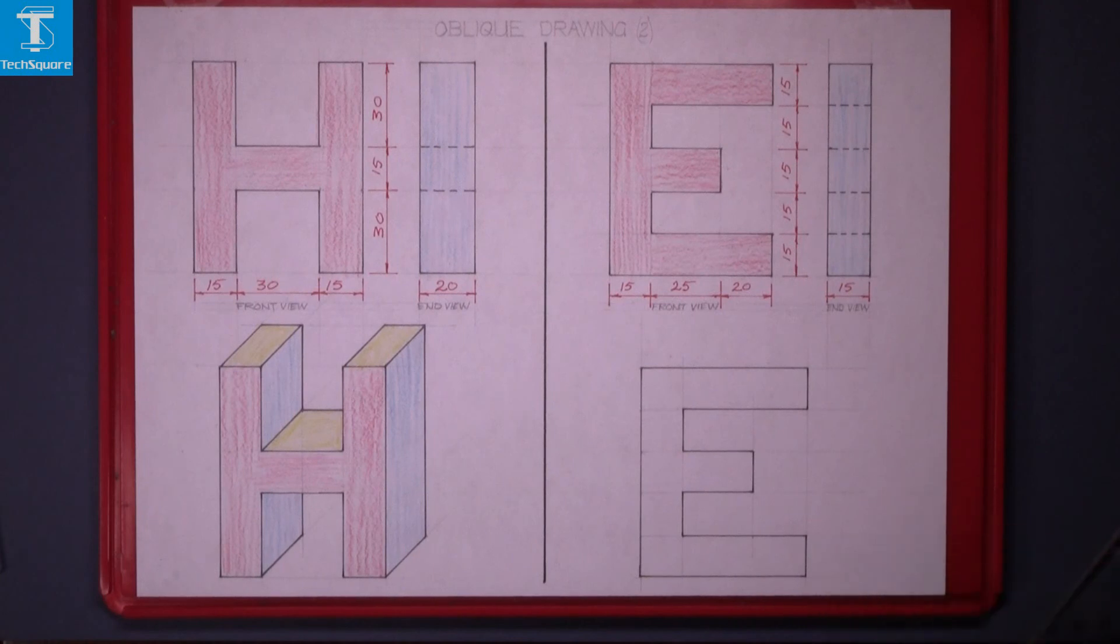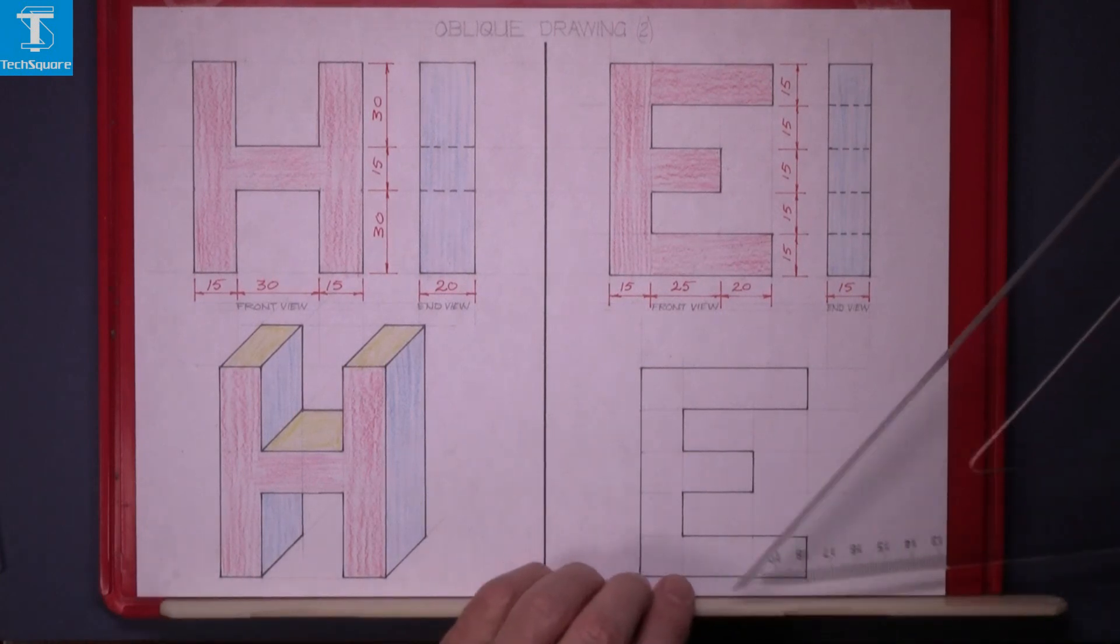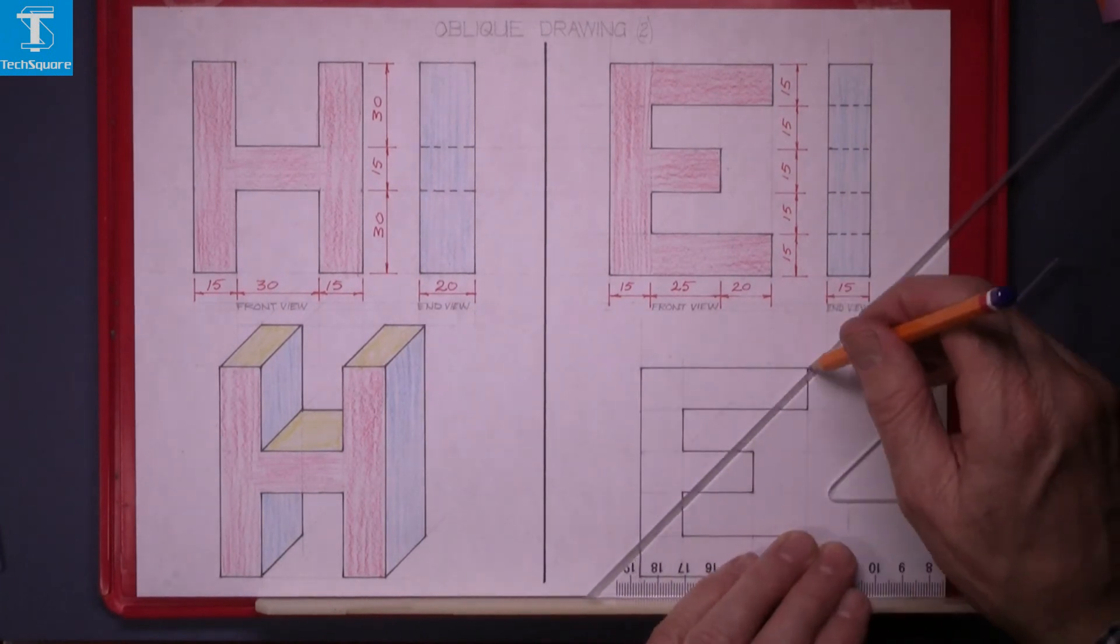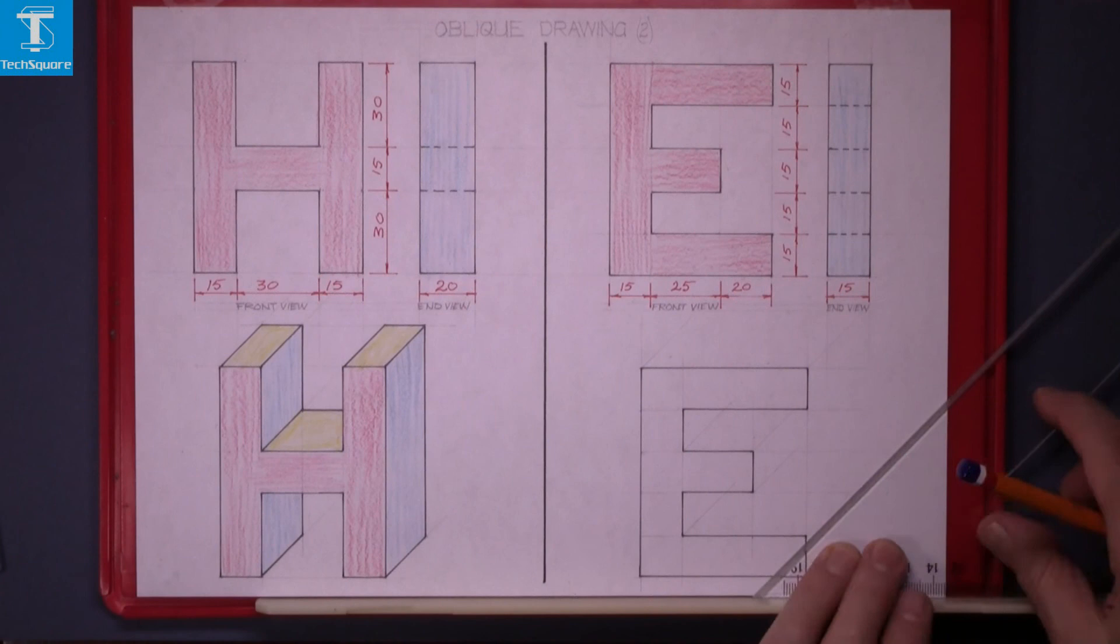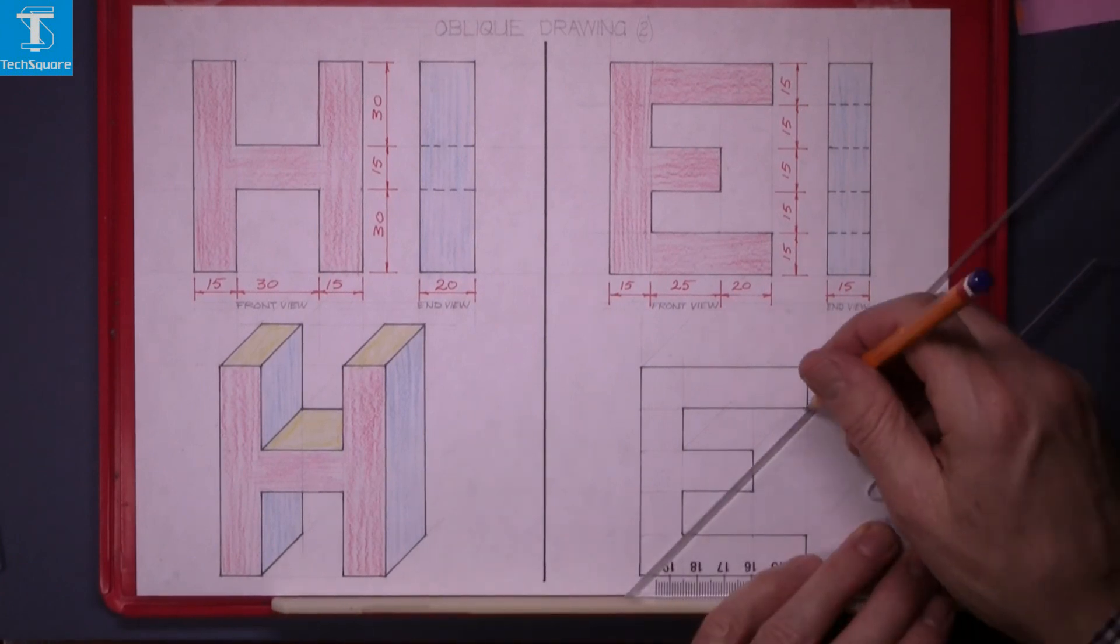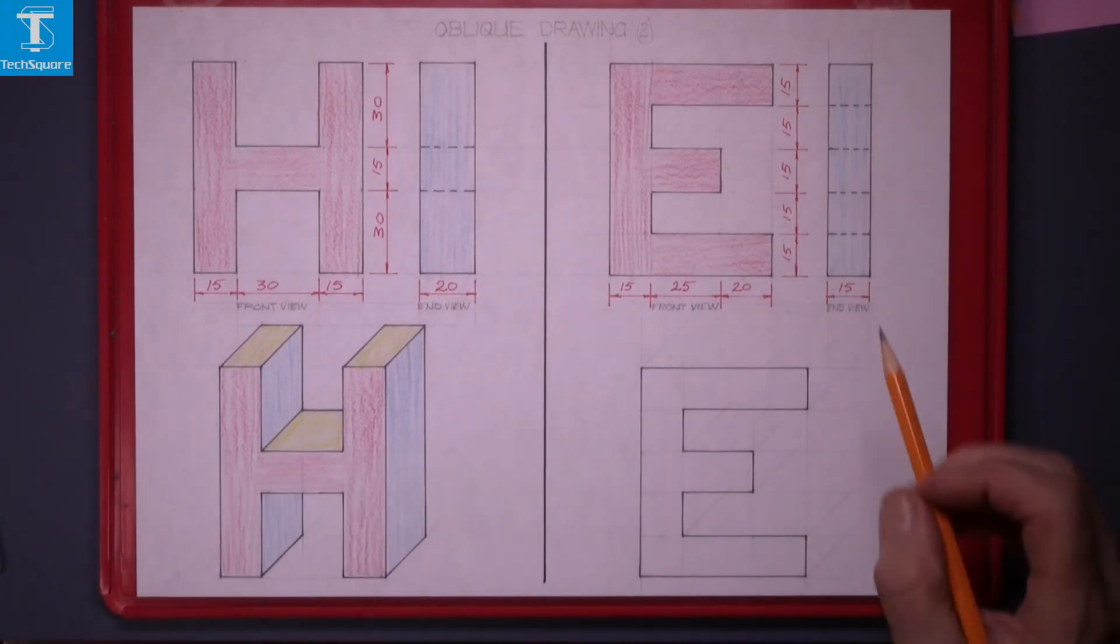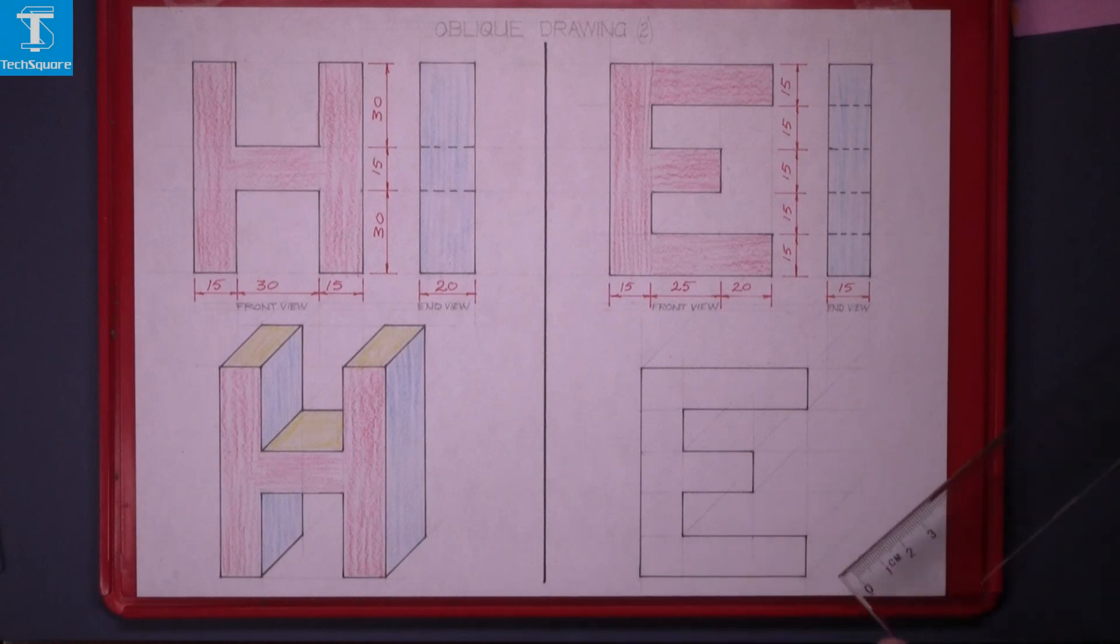Draw back at 45 degrees again from each point. That's back at 45 degrees. Now measure back the thickness of the letter which is 15.